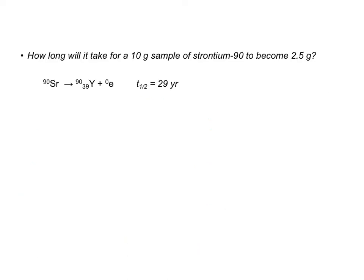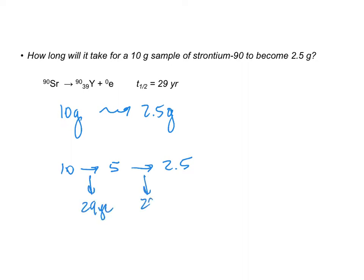You might see a different sort of problem. If you have a 10-gram sample of strontium-90, how long does it take to become 2.5 grams? You may recognize that 10 ÷ 2 = 5, and 5 ÷ 2 = 2.5, so two half-lives have passed: 29 years plus 29 years gives a grand total of 58 years. I did not have to use the integrated rate law. Sometimes a professional exam asks this to see if you understand what a half-life is.